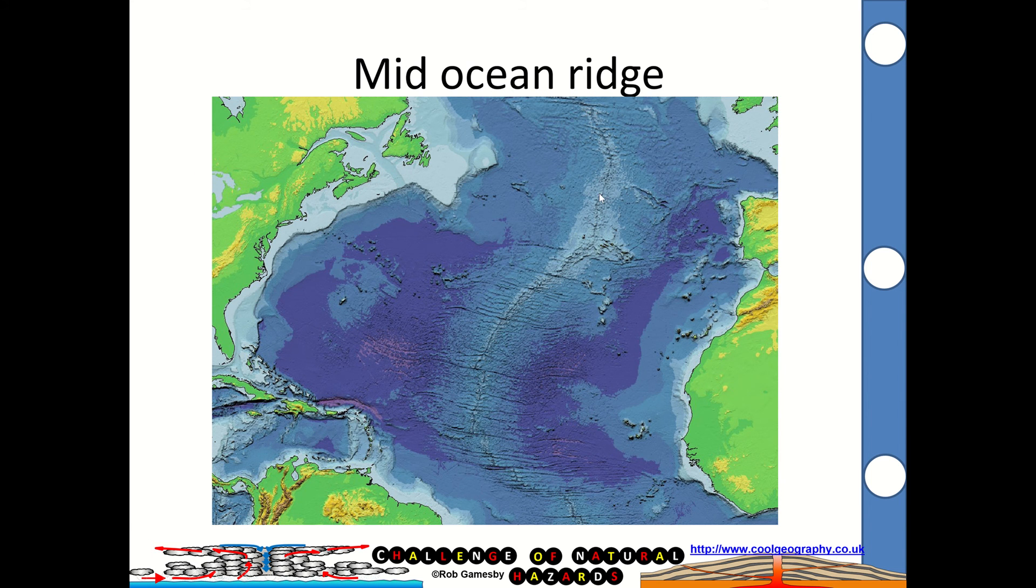So you can see that running there, down the middle of the Atlantic. We've got fault lines running across as well, transform fault lines. You see the southern end of Ireland there, the western tip of the United Kingdom. You've got the eastern seaboard of the United States and so on. So, as you move away from the ridge, the rocks get older.